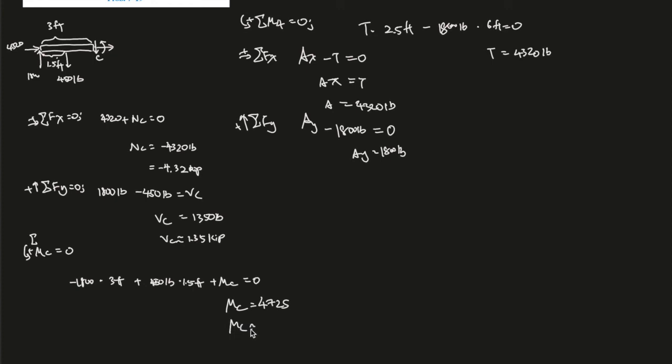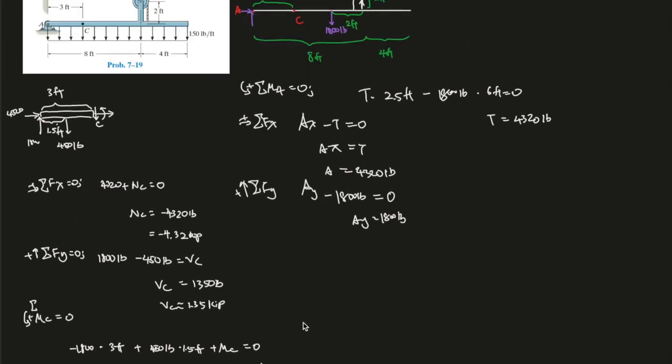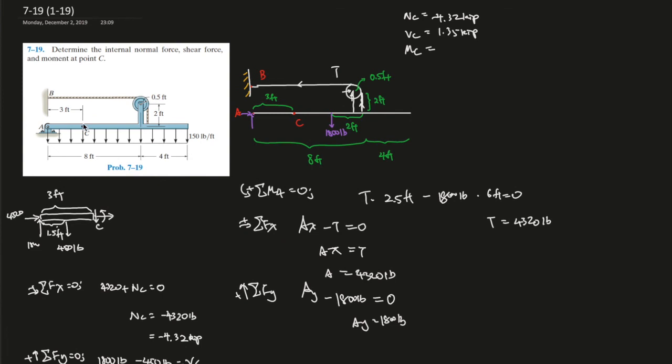Round to three sig figs, it should be 4.73 kip times foot.